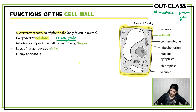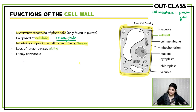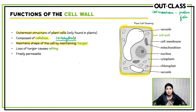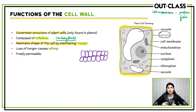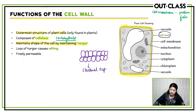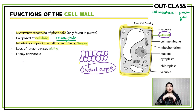A very important function of the cell wall is that it maintains the shape of the cell by maintaining turgor pressure. When plant cells absorb water, they swell up, but they do not burst because the cell wall maintains their shape. These swollen cells push against each other, filling the gaps between them, and this pushing against one another lends structural support to the plant. The turgor pressure — the pressure inside the cells — causes them to push against each other, giving structural support to the plant.